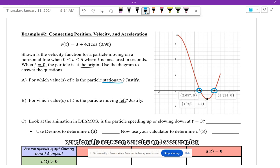So if you guys can annotate this, because we know Ms. Lopez loves to annotate. So it's stationary when velocity is equal to zero. And so it is stationary at t equals 2.657 and at t equals 4.324, because at those points, velocity is equal to zero.